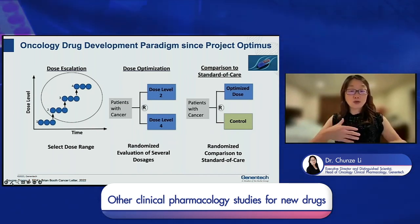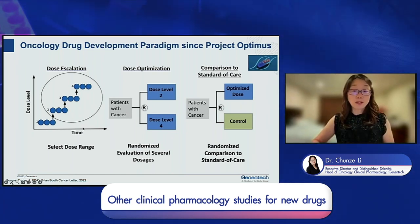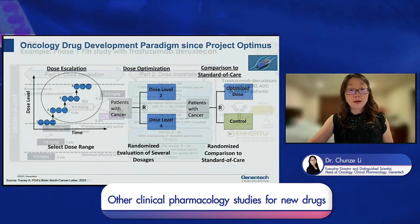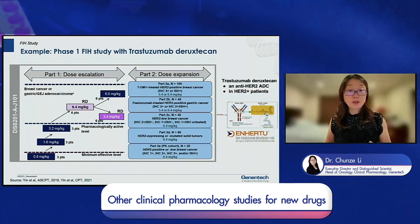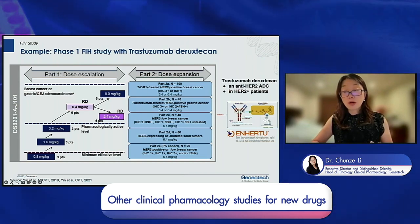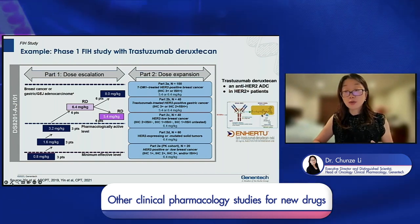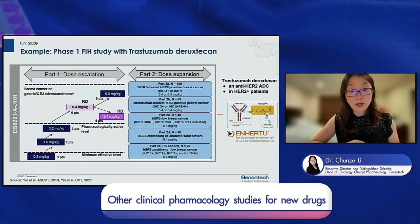The industry is still gradually adapting this paradigm based on their learnings from dose escalation. As an example, I want to show a phase one first-in-human study design for trastuzumab deruxtecan, an ADC. This is a HER2 antibody-drug conjugate — a typical antibody linked via a peptide linker to a small molecule topoisomerase I inhibitor. The first-in-human study had two parts: dose escalation using a typical 3+3 design with three patients per dose level.